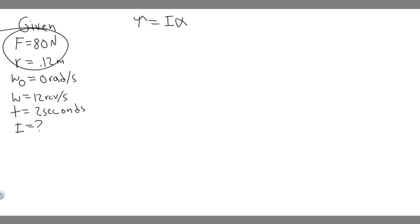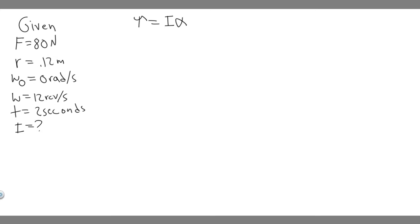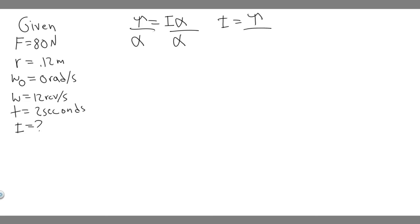In terms of angular acceleration, we're given rotational kinematic variables, so we should be able to solve for alpha. If we have alpha and torque, we can solve for I — just divide both sides by alpha to get I equals torque over alpha. So we'll solve for torque using the force and radius, and solve for alpha using the kinematic variables. That's the plan.